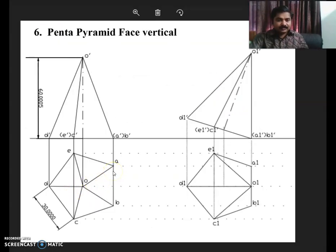So in this case, one edge of the pentagonal pyramid is perpendicular to VP. So this edge can be drawn perpendicular to XY line because this edge is perpendicular to VP.